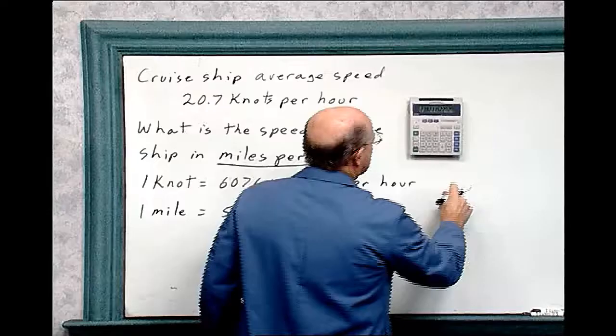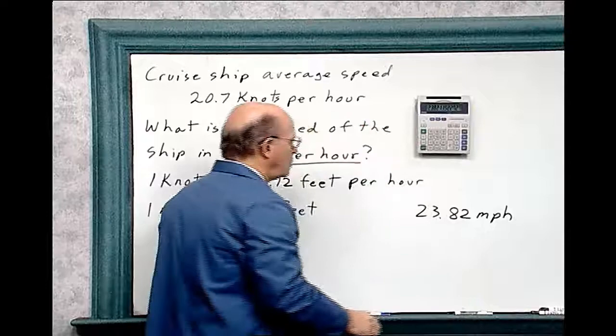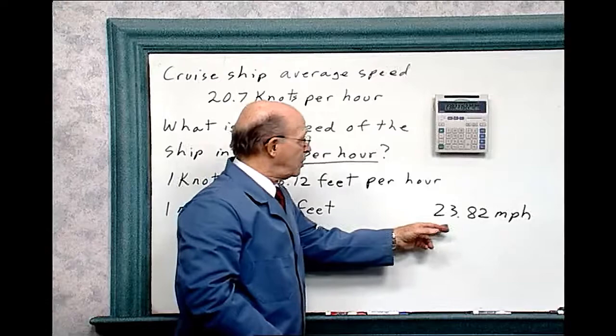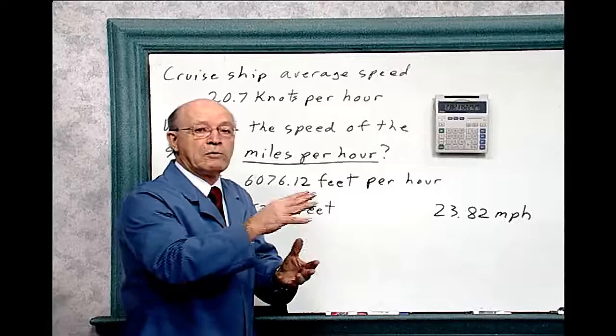So the answer is 23.82 miles per hour. So the ship traveling 20.7 knots per hour is traveling 23.82 miles per hour. So you can see that when you see knots, you know it's going to convert to miles per hour. It's going to be a little bit faster when you're traveling miles per hour than knots per hour.